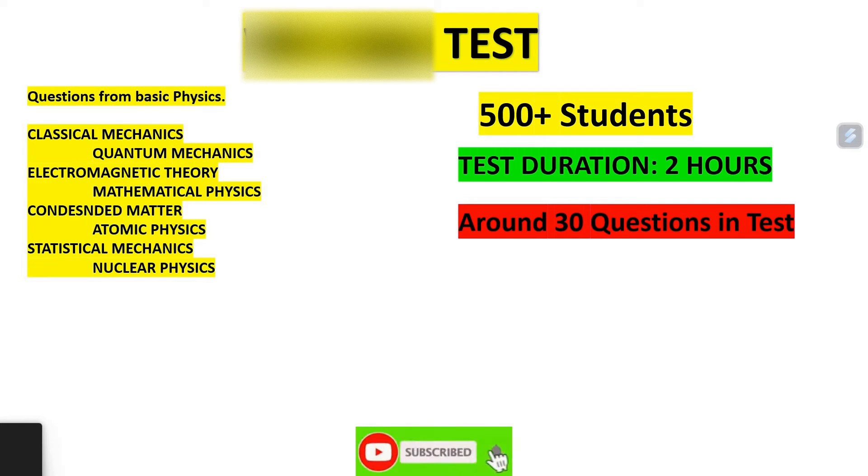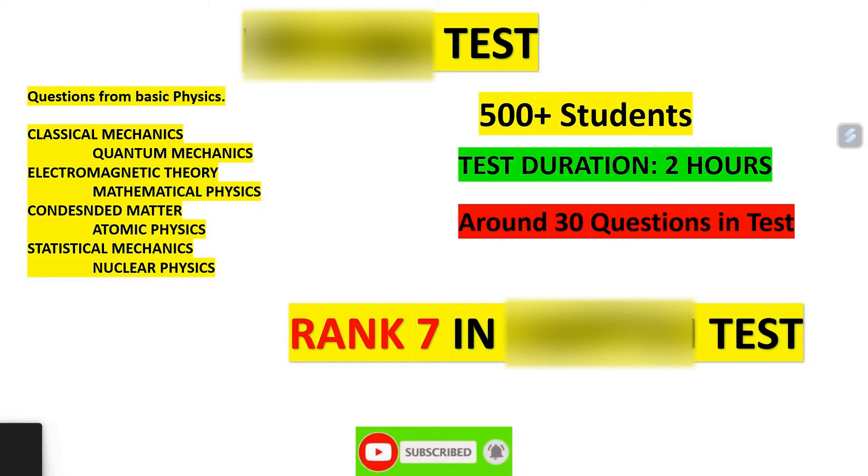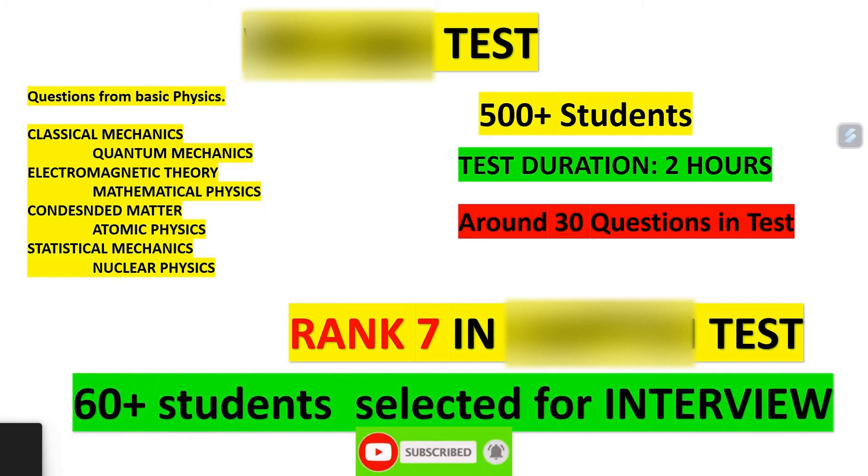The questions were from basic physics, mainly classical mechanics, quantum mechanics, electromagnetic theory, mathematical physics, condensed matter physics, atomic physics, statistical mechanics, and nuclear physics. My written test went very well and the result came out in almost two hours. I was selected among 60 plus students and my rank was seventh.